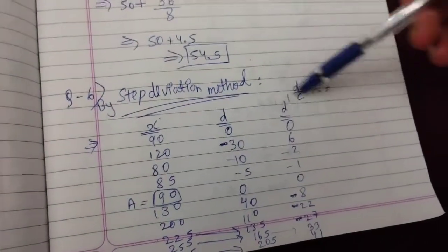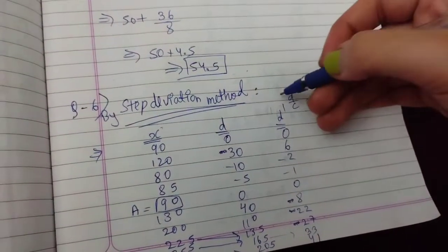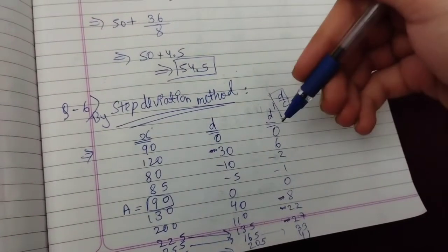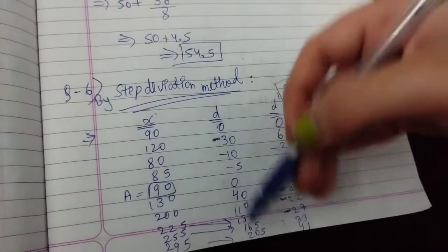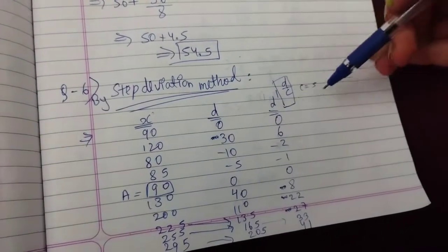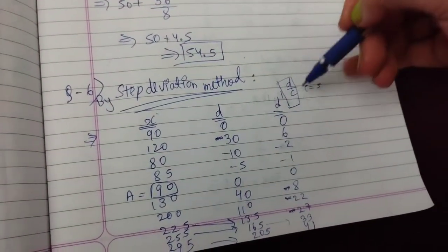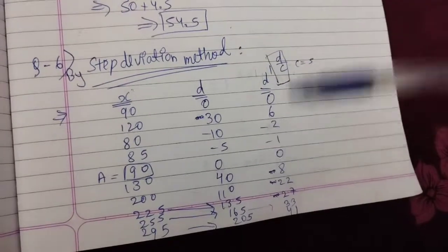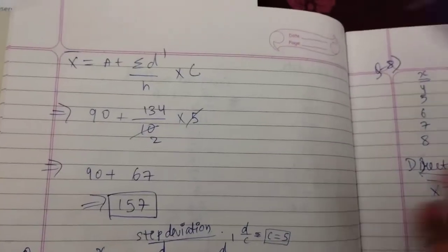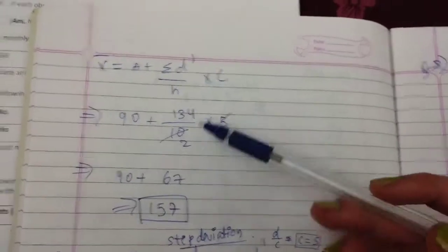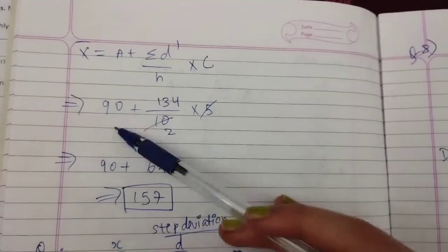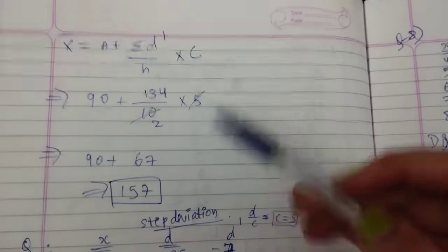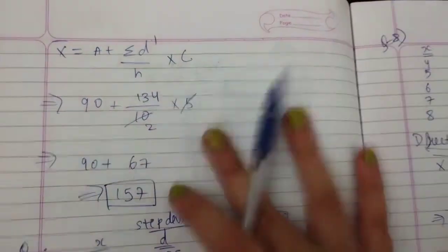We find D dash, where D dash = D divided by C. After totaling D dash (Sigma D dash = 134) and using n = 10 with assumed mean A and C = 5, we apply the formula A plus Sigma D dash upon n multiplied by C, and get the answer 157.